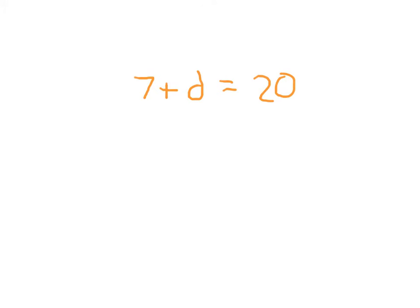This type of problem is completed in much the same way. 7 plus D equals 20 could be rewritten because of the commutative property of addition as D plus 7 equals 20. And we've got the plus 7 on this side, which is extra at this point.